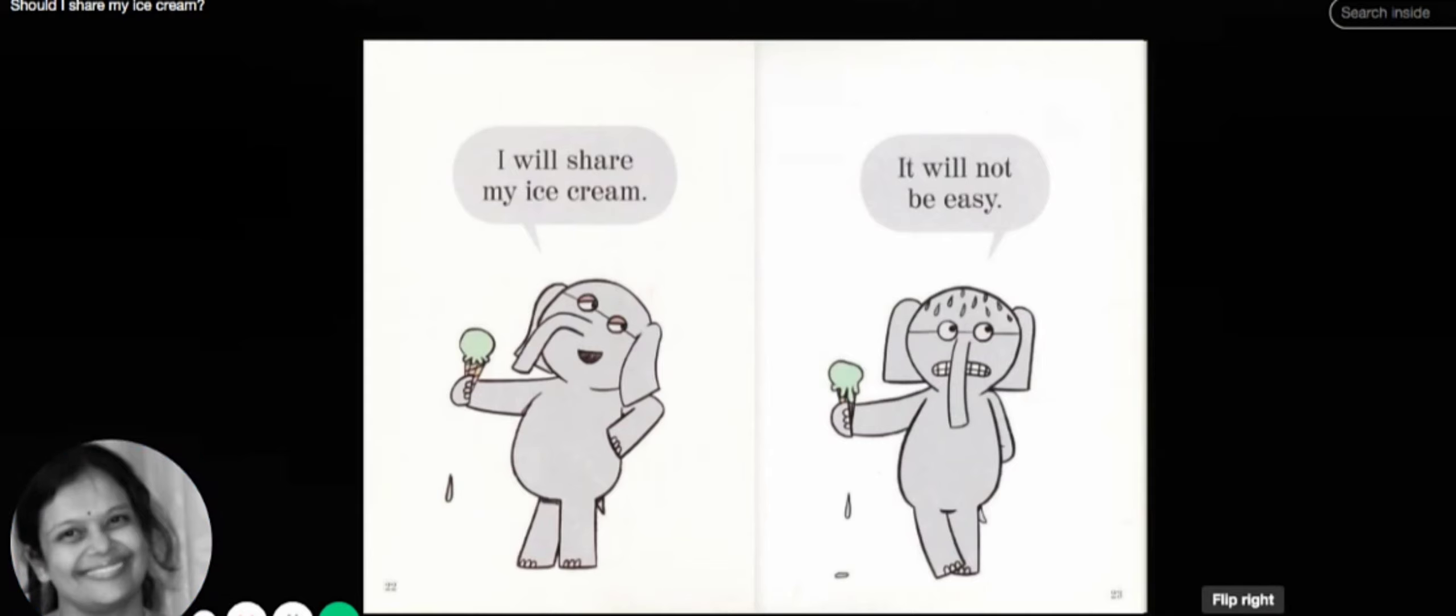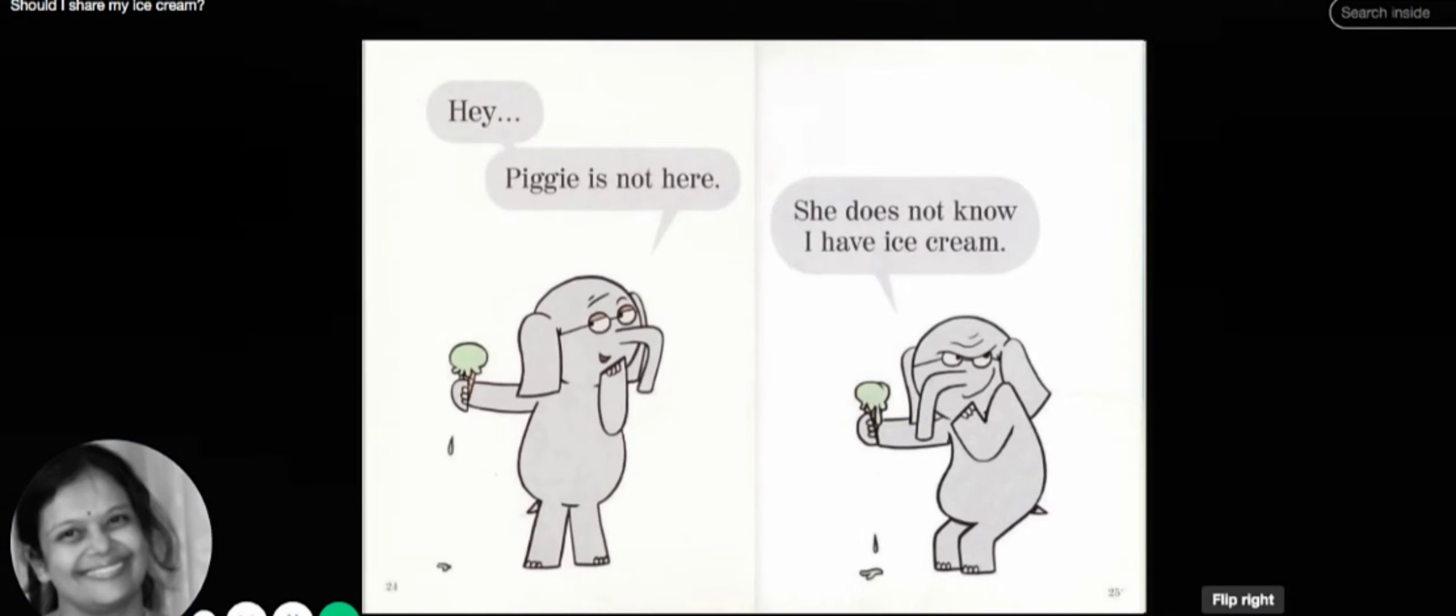It's slowly melting. It will not be easy. I cannot eat it without sharing with her. Hey Piggy! Hey—Piggy is not here. She does not know that I have an ice cream. Look at that naughty elephant—for a moment he thinks, 'She does not know I have an ice cream.'